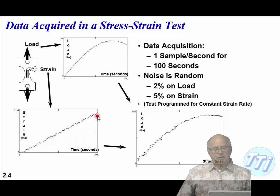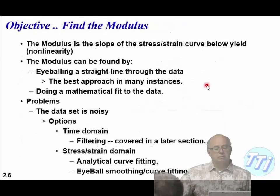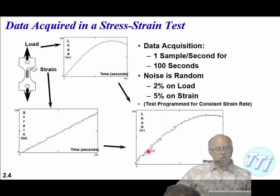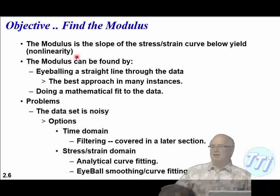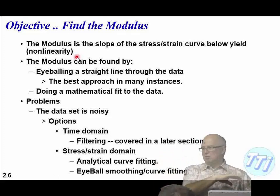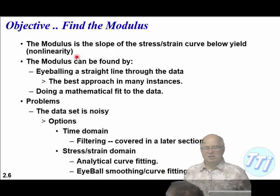The modulus is the slope of the linear region — somewhere down here is the linear region, and the slope of that is the Young's modulus. There's something on this slide I disagree with vehemently because of my background. I do not like eyeballing a straight line through data. I hate that with a passion. There are some tests where I will eyeball — like a ring-down test looking for damping, where it can work well — but in this case, because I'm looking for a straight line, my background is in uncertainty analysis.